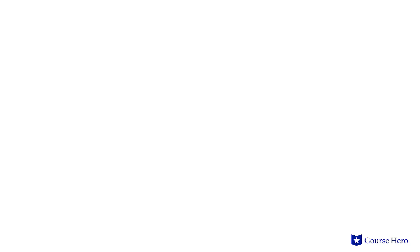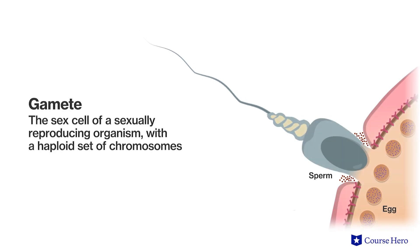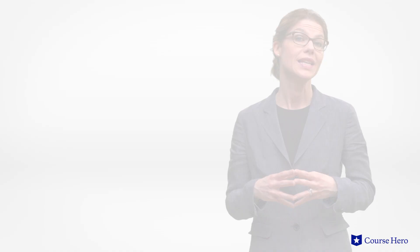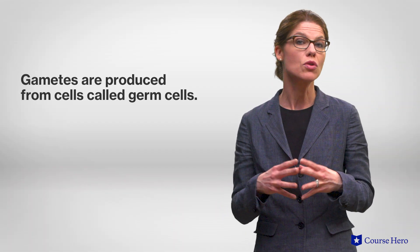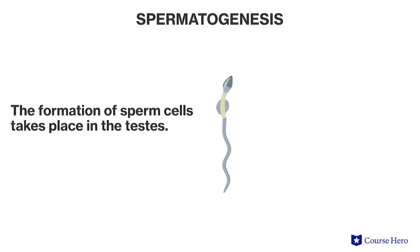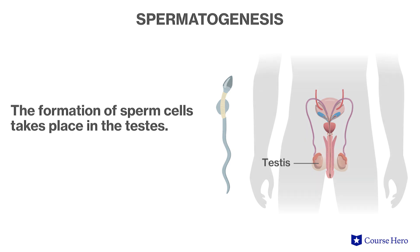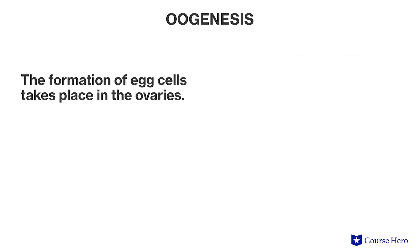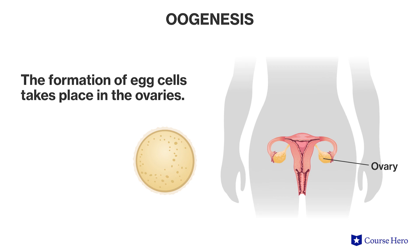A gamete is the sex cell of a sexually reproducing organism with a haploid set of chromosomes. Gametes are produced from cells called germ cells — specialized cells that are activated when animals reach reproductive age. Spermatogenesis is the formation of sperm cells and takes place in the testes, whereas oogenesis is the formation of egg cells and takes place in the ovaries.